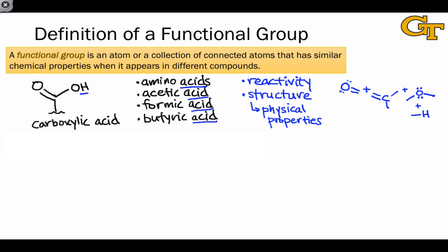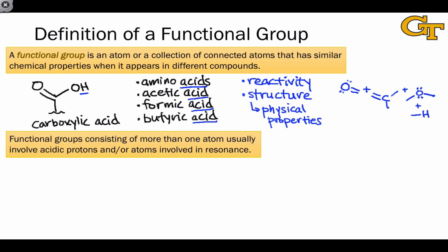We alluded earlier to the idea that functional groups are latched onto a carbon skeleton and this hints at how we recognize functional groups within molecules. But I want to clarify this a little bit more and say that functional groups consisting of more than one atom typically involve either acidic protons or atoms involved in resonance or both.